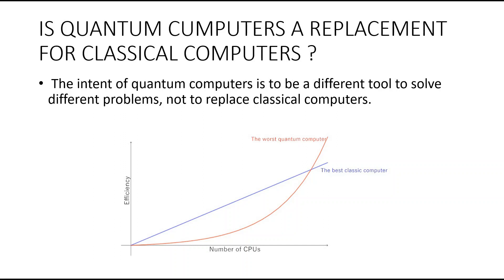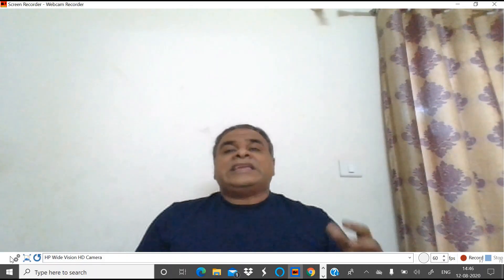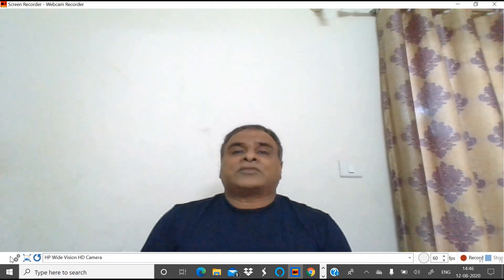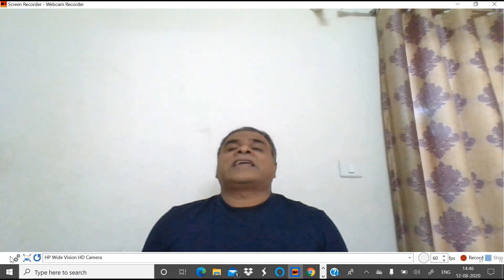Are quantum computers a replacement for classical computers? Classical computers are better at some tasks than quantum computers — for example, email, spreadsheets, and desktop publishing, to name a few. The intent of quantum computers is to be a different tool to solve different problems, not to replace classical computers.